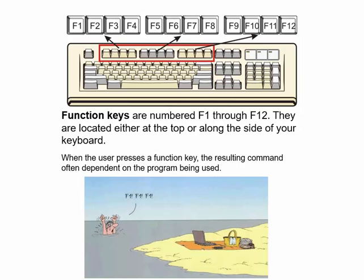An exception is the F1 key, which has become the universal standard for help. When you press F1 in almost any program or context, it will pull up the help for that program — it has become the de facto standard. Generally speaking, function keys behave differently program to program, and even context to context within the same program. There's a cartoon at the bottom of the screen where a guy is drowning and yelling 'F1, F1, F1' because he's calling for help. Computer people are funny.